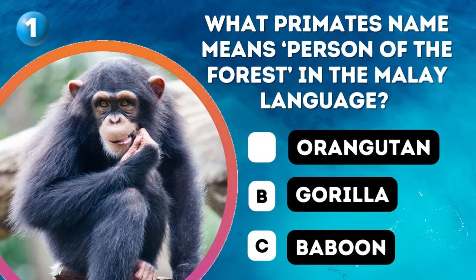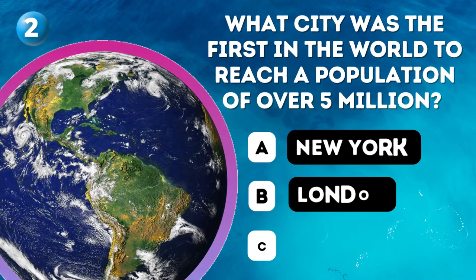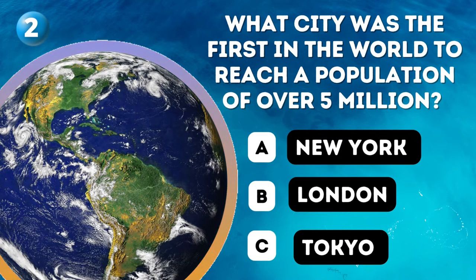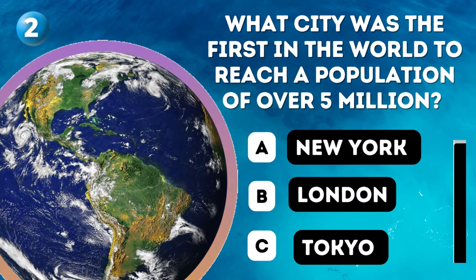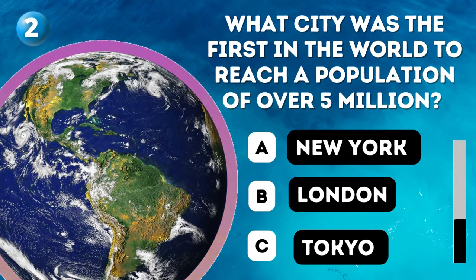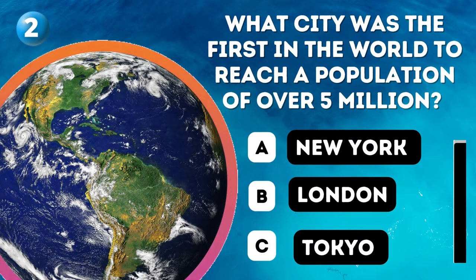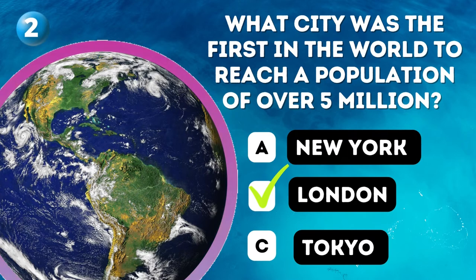Question 2. What city was the first in the world to reach a population of over 5 million? A. New York, B. London, C. Tokyo. Answer: London.